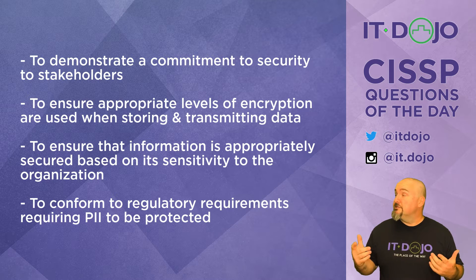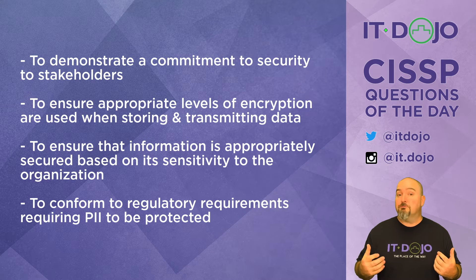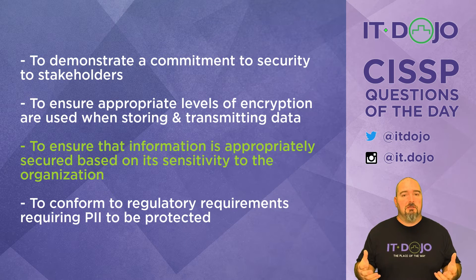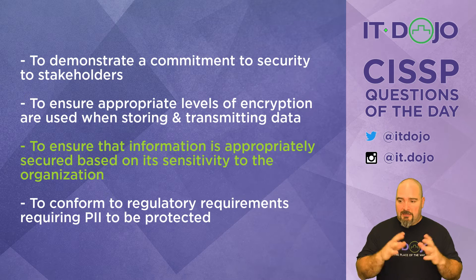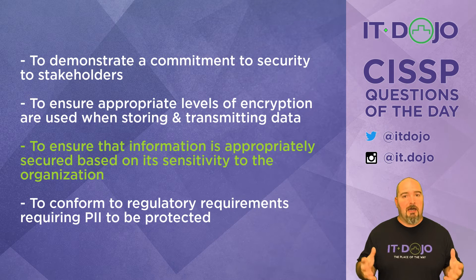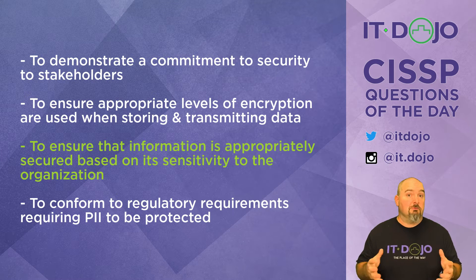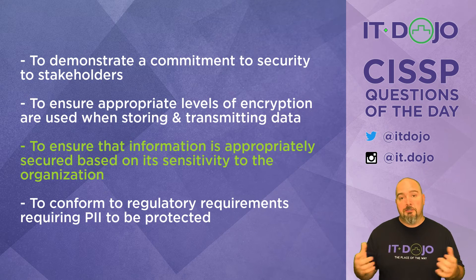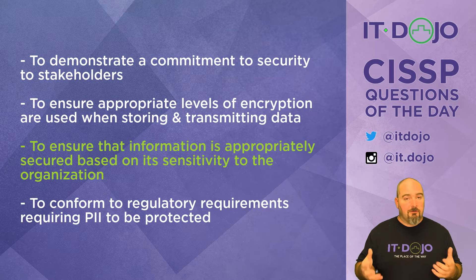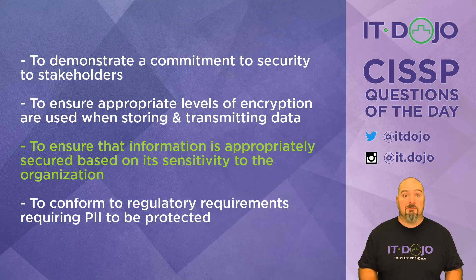Choice number three says that you want to make sure that information is appropriately secured based upon its sensitivity to the organization. Yes — that's sufficiently vague, high-level, and still true enough that it encompasses the umbrella idea behind an information classification policy: making sure that information and resources are adequately protected, that we don't over-protect things and we don't under-protect things. That answer aligns very much with what an information classification policy's most important objectives are.